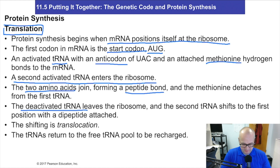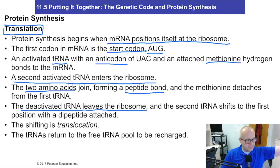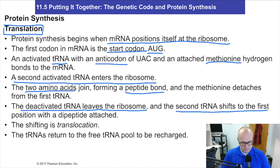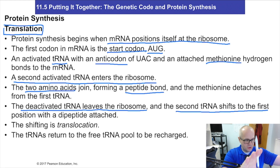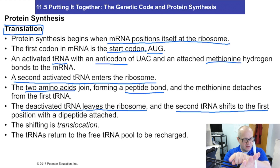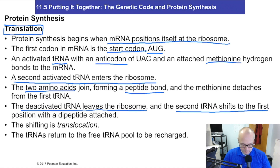The deactivated tRNA leaves the ribosome. Once you've donated your amino acid, you leave and diffuse back out into the cell. The second tRNA shifts to the first position — one RNA is done, it's lost its amino acid, and this one shifts over one position, leaving a spot empty for a new tRNA to come in. This shifting is known as translocation.